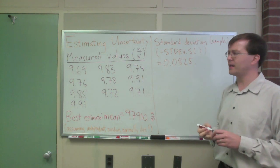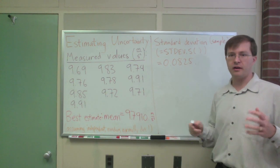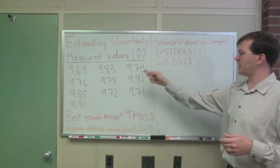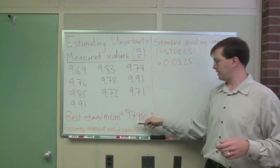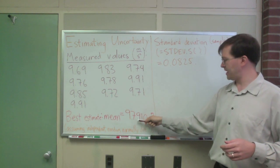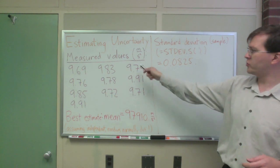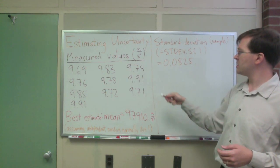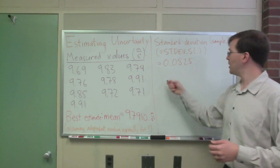Standard deviation, roughly speaking, that means that, again, normally distributed uncertainty, that means that roughly two-thirds of these data points should be within 0.08 of the mean. So between 9.72 and 9.87, about two-thirds of the data, so about six data points, seven data points should be in that range, and that's pretty close at least. So okay, that's my standard deviation.